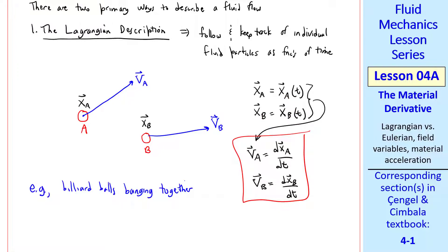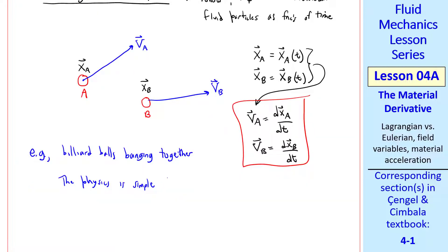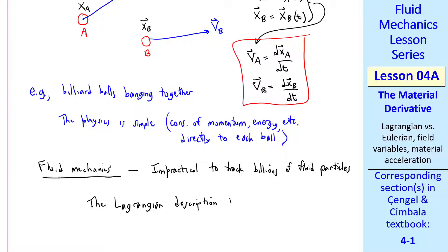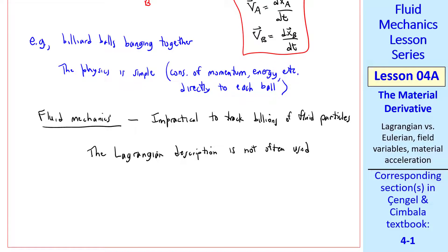For example, billiard balls banging together. In high school physics, we did these kinds of experiments where we documented the position vectors of a couple of billiard balls. We just track each ball and see where they go. The physics is relatively simple — we just apply conservation of momentum and energy directly to each billiard ball. The problem in fluid mechanics is we don't really have individual particles. Rather, we have a continuum flow. It would be impractical to track billions of fluid particles. So the Lagrangian description is not often used for fluid flow, although some sophisticated computer codes do use a Lagrangian description — they require supercomputers for practical problems.